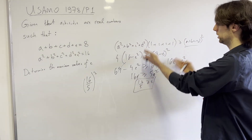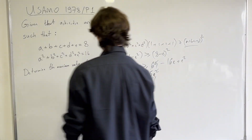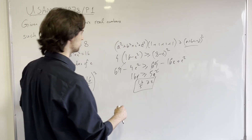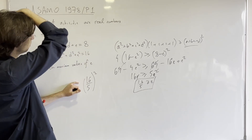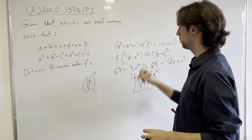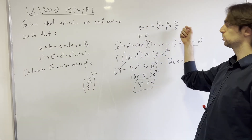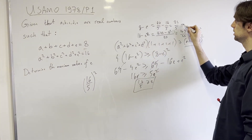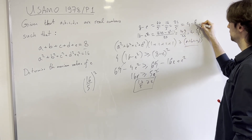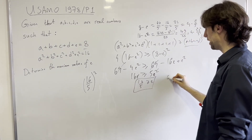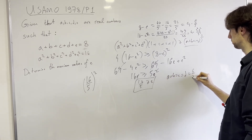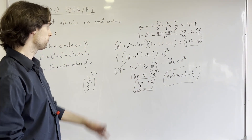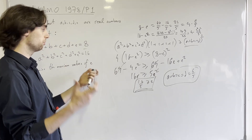We want equality here, so we need equality in the Cauchy-Schwarz step. With this in mind, 8 minus e is going to be 24 over 5, and 16 minus e squared equals 4 times 6 over 5. So it seems when a equals b equals c equals d equals 6 over 5, we get that e is 16 over 5. And here we've proved that this is in fact the maximum. This finishes up our problem.